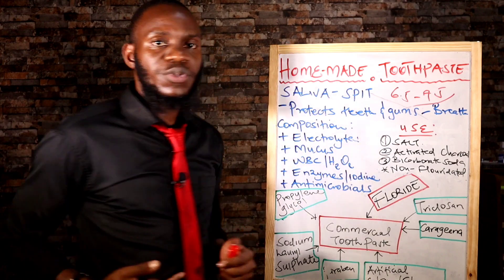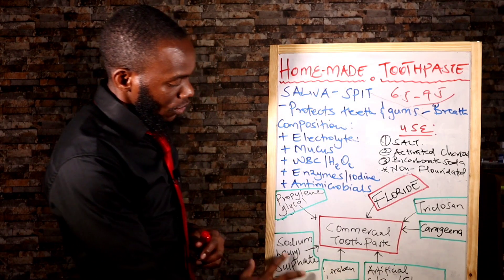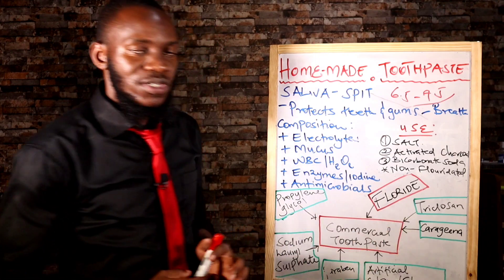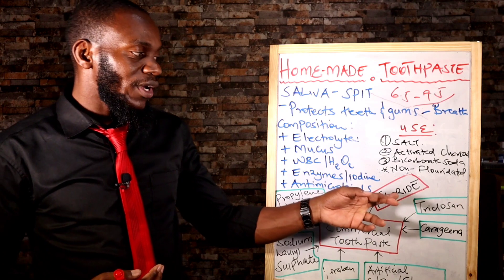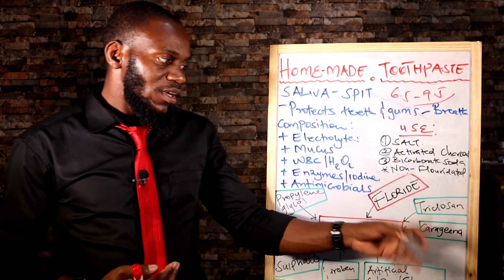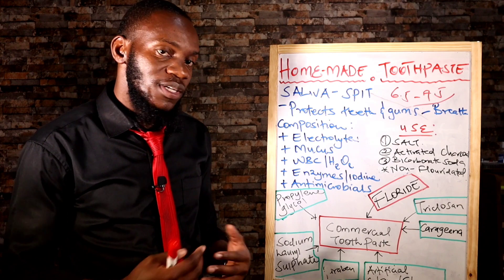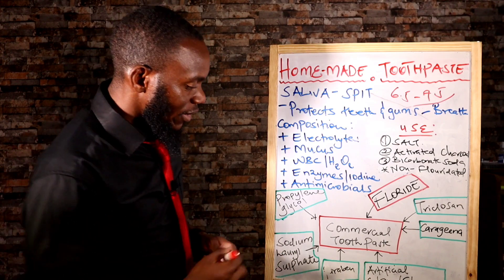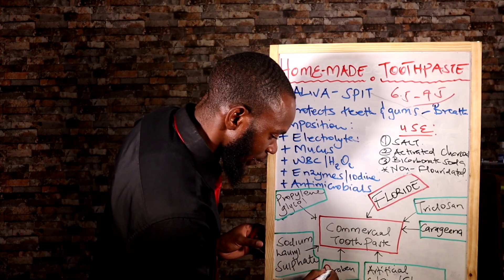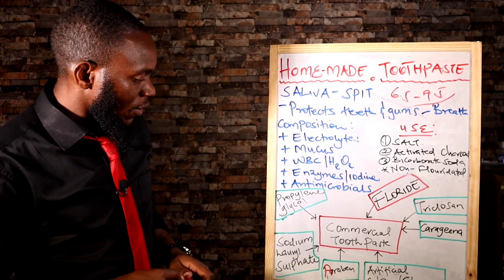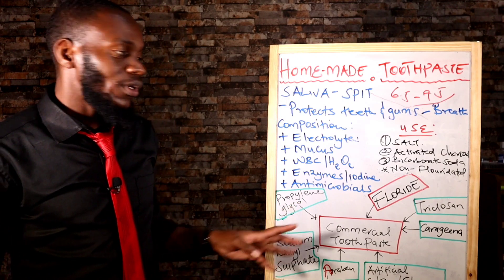One of them is commercial toothpaste. I've indicated different compounds — the ones highlighted are the ingredients in commercial toothpastes. We have fluoride, we have triclosan, carrageenan, artificial colorants and flavorants — all synthetic. Then we have paraben, sodium lauryl sulfate, and lastly, propylene glycol. These are the basic components in a commercial toothpaste, and you'll find these as the major ingredients in any brand.